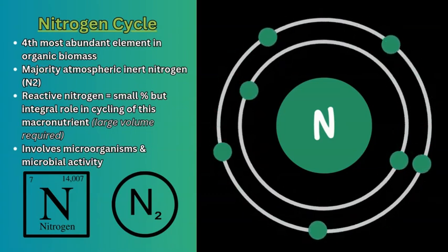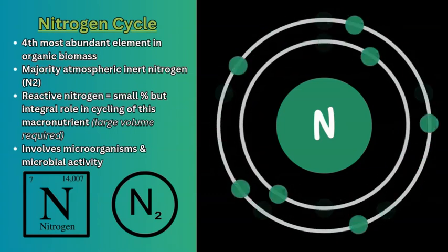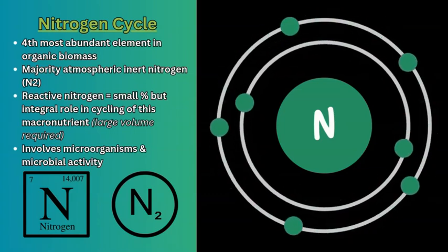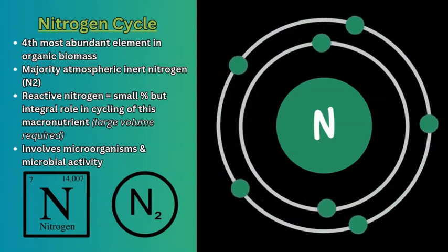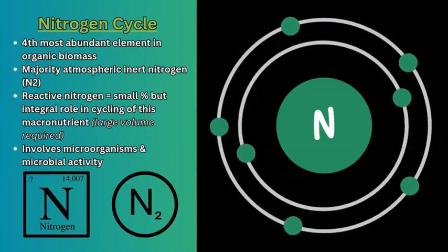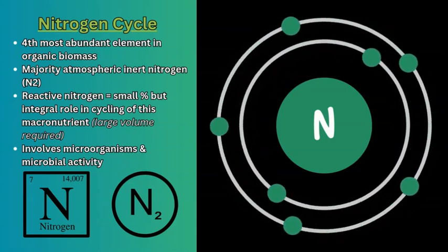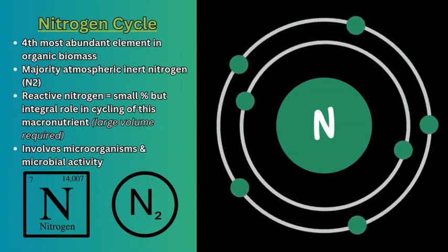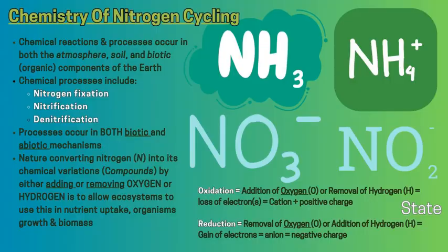This element is fantastic in terms of its importance for life and how it cycles through our planet. There are three main processes that occur to nitrogen throughout this cycle on Earth. The first one is nitrogen fixation.